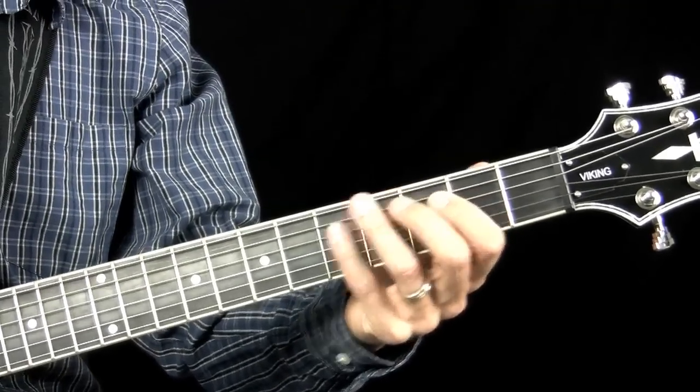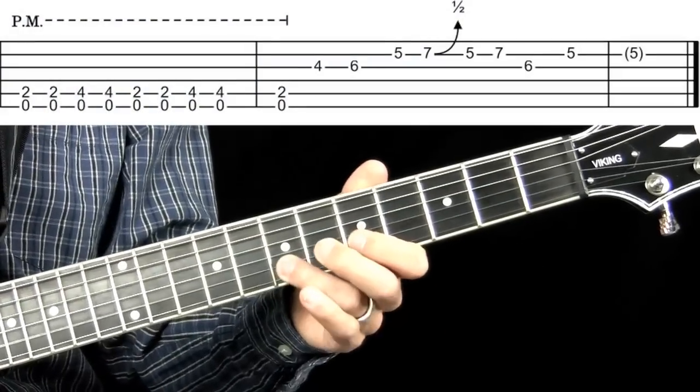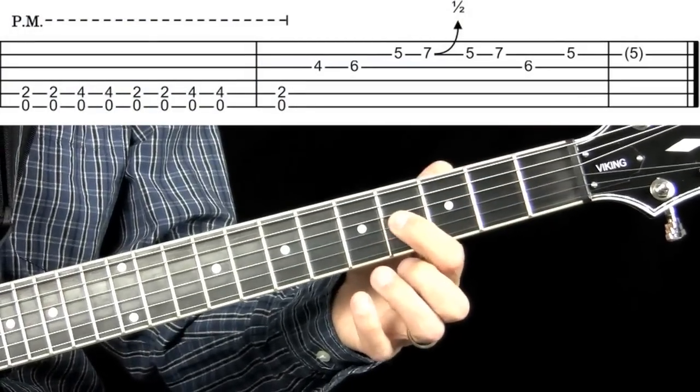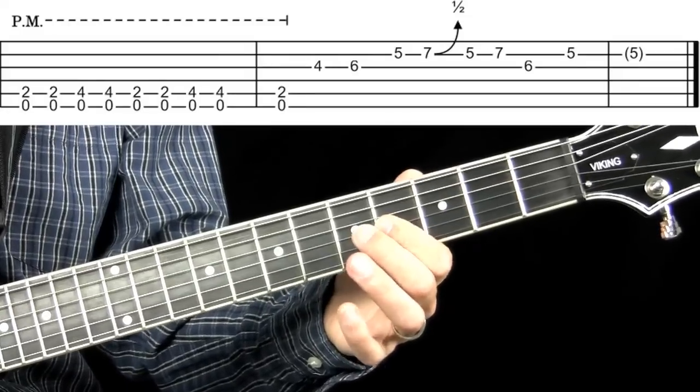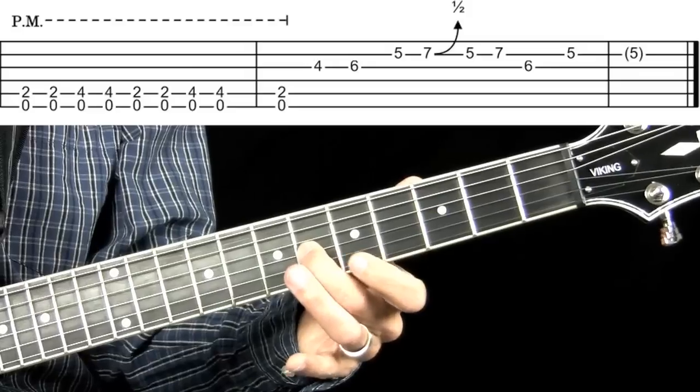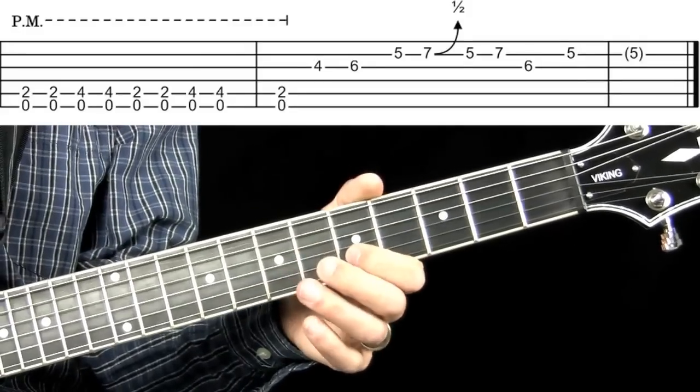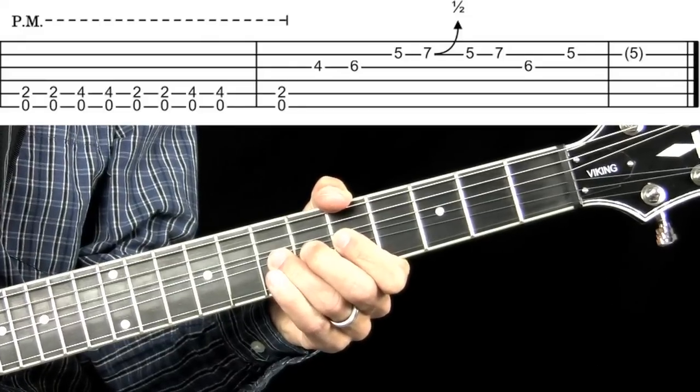Now the next lick is like this. Here on the G string on the fourth fret, sliding this note from below, switch into the B string and then do a bend here, a half step bend.